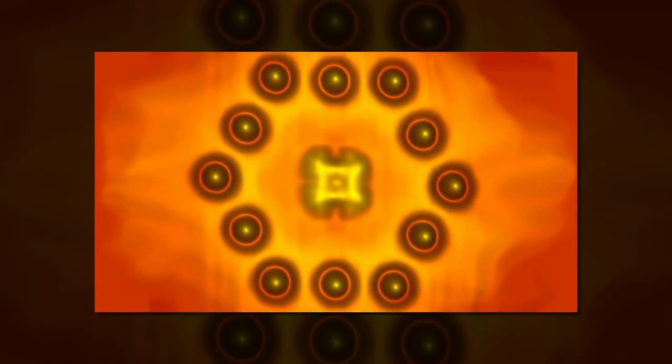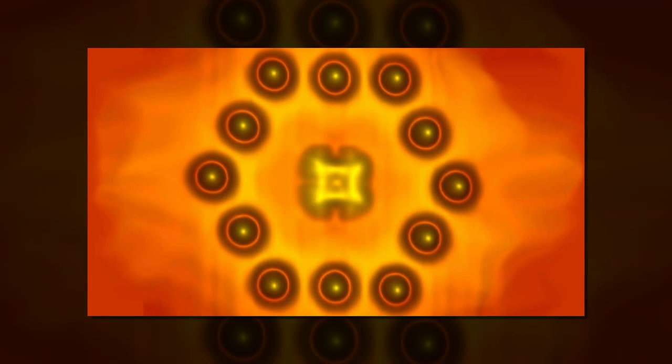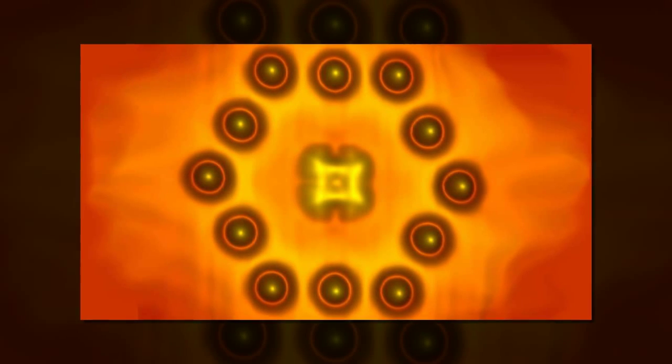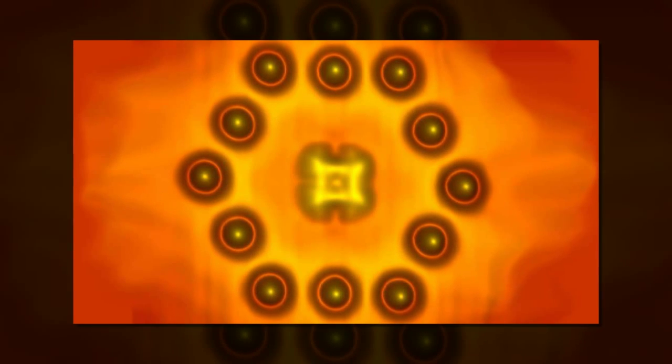To perform this feat, the researchers used techniques that IBM pioneered in 1990 when researchers created the letters I, B, and M by moving single atoms on a metal surface. IBM made movies using individual atoms in 2013.